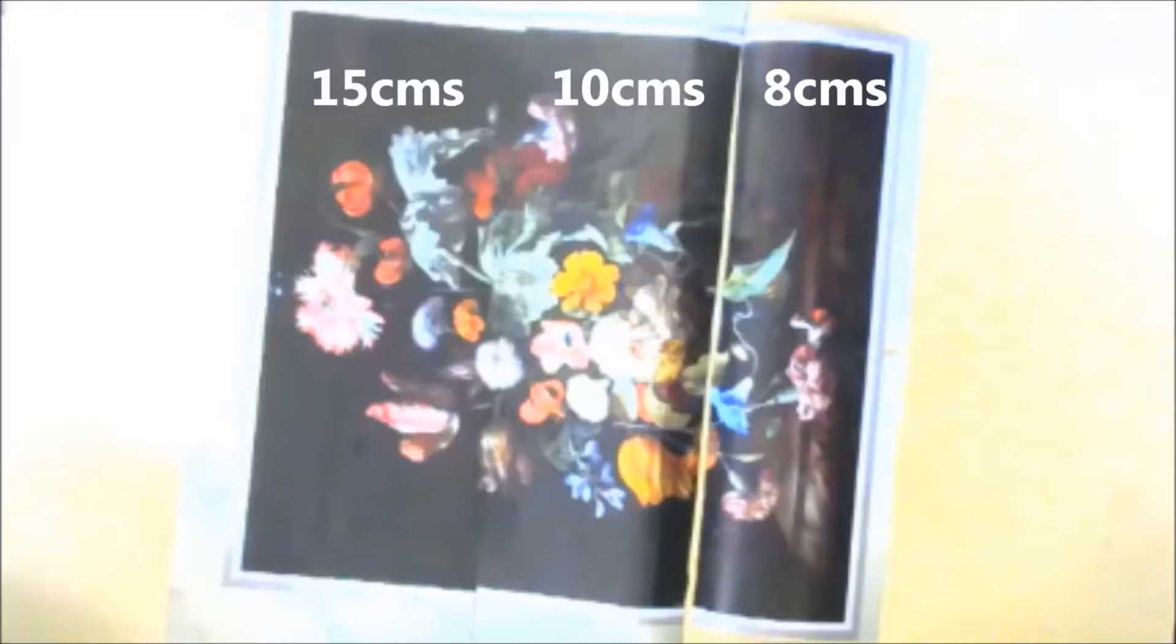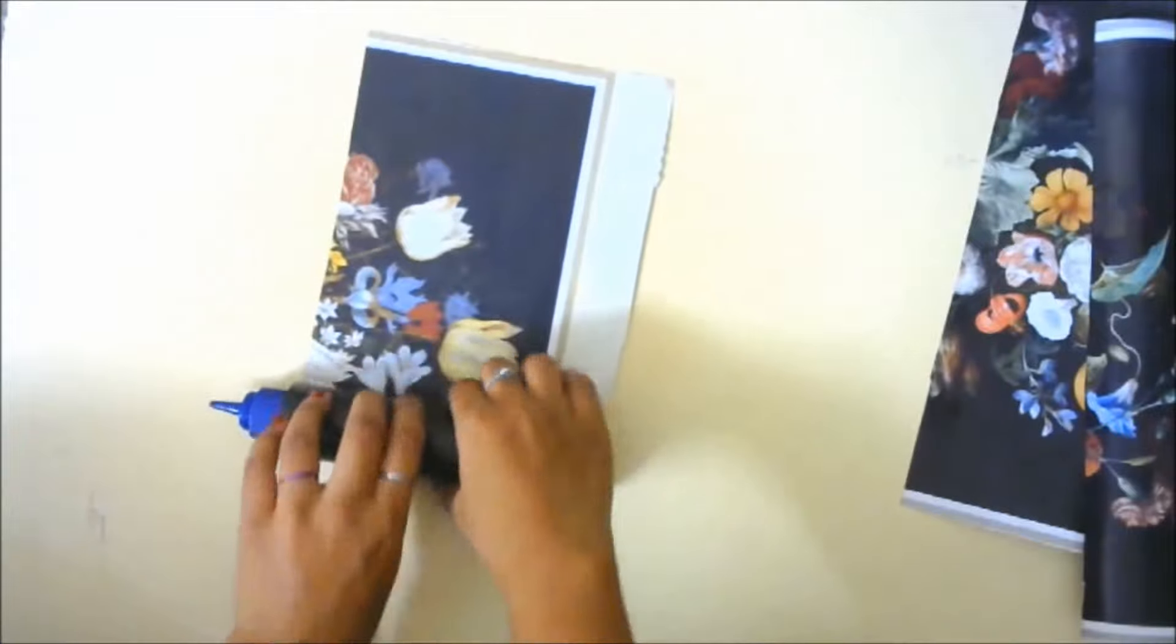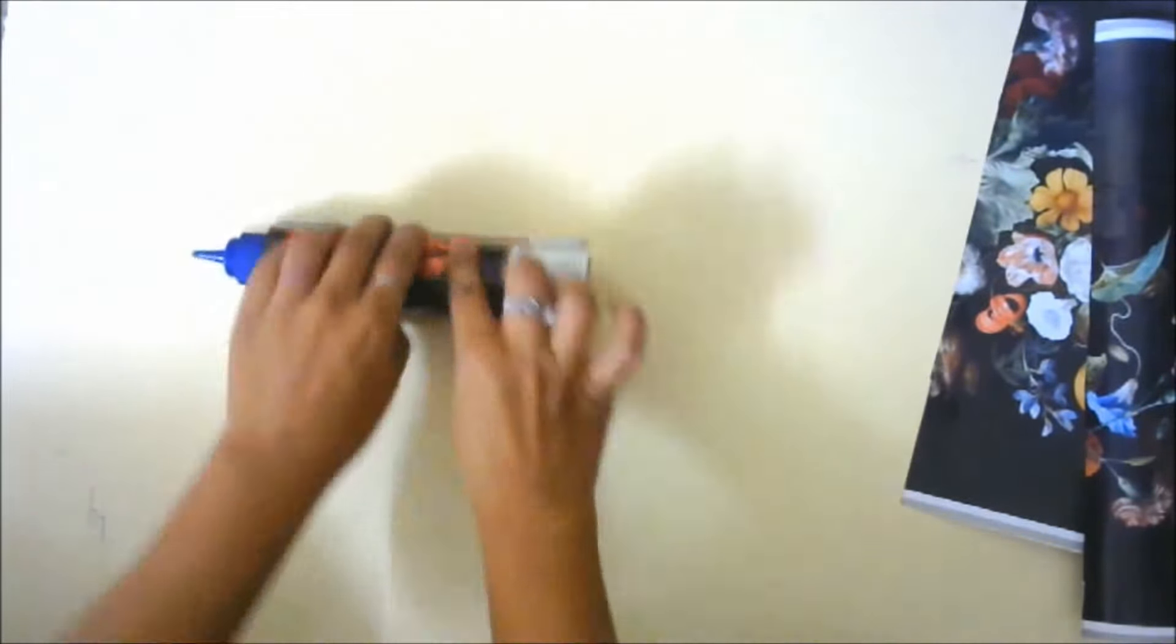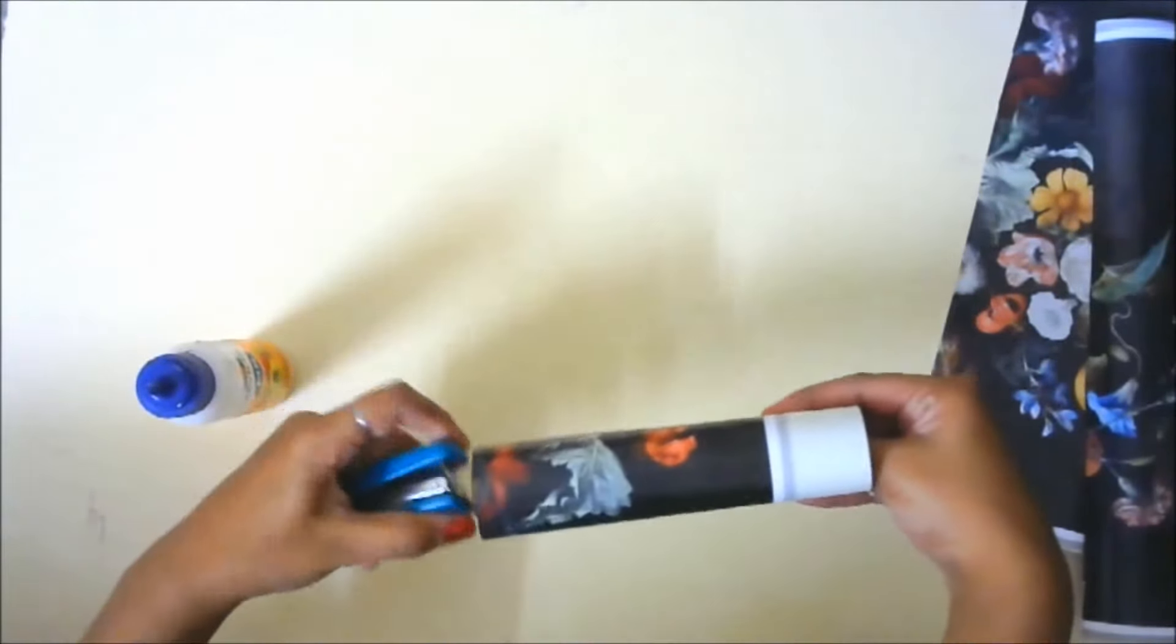Now start rolling the paper around the glue bottle or whichever circular bottle you have and start making a roll out of this. Now take out the bottle and staple the ends together so that the shape remains the same.